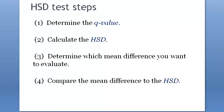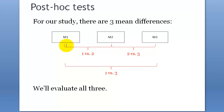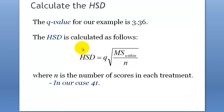To do the HSD test, we go through these steps: determine the Q value, calculate the HSD, determine the mean differences you want to evaluate, and compare each mean difference to the HSD. So basically we get three mean differences — between groups one and two, between groups two and three, and between groups one and three — and evaluate all three using the HSD test. As you can see from the formula, the value involves the within-group variance, and N is the number of scores in one group.